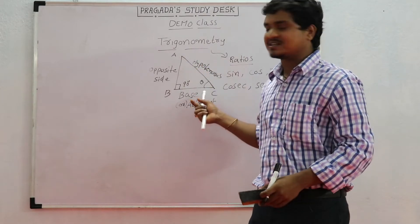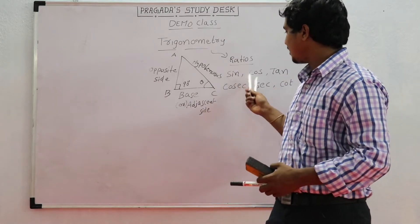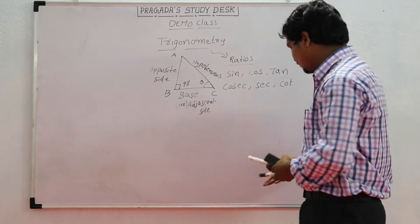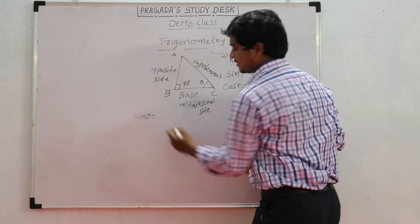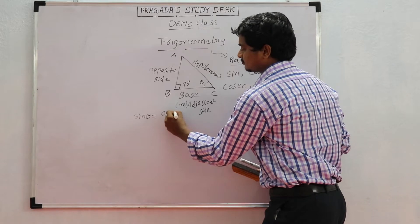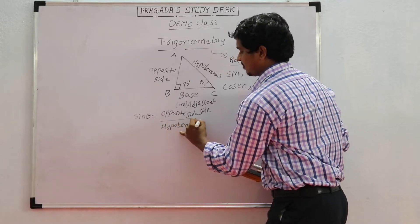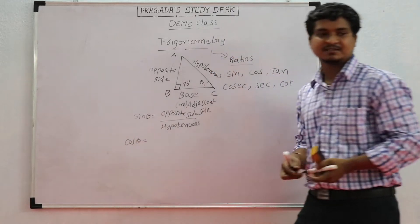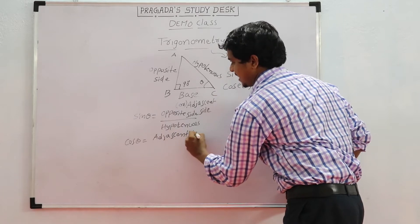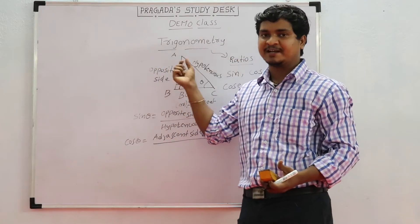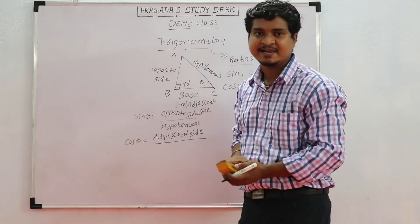By using these 3 sides, we can measure the ratios in terms of sides. We need to find sin theta, cos theta, tan theta, cosecant theta, secant theta, and cot theta. Sin theta is nothing but opposite side divided by hypotenuse. We can also call the opposite side the perpendicular. The hypotenuse is the longest side in the right angle triangle.